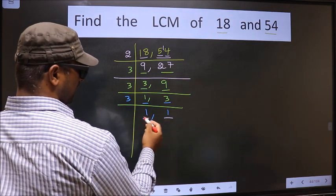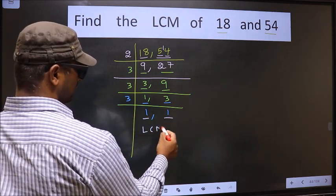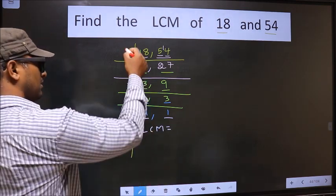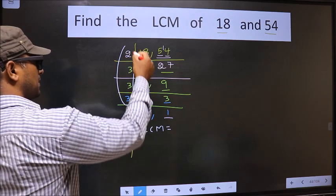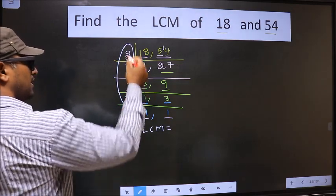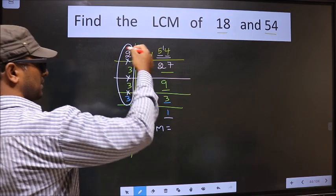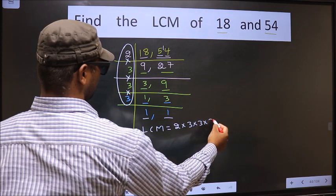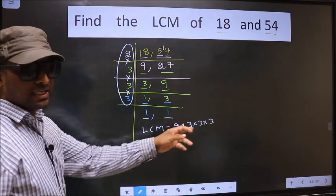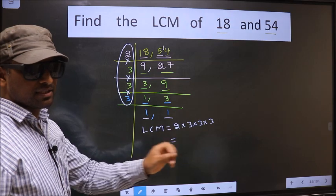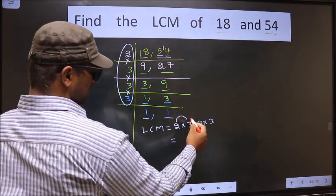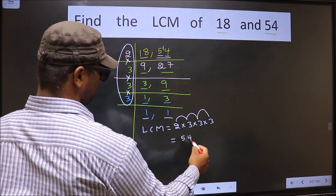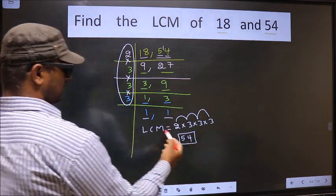We got 1 in both places. So our LCM is the product of these numbers, that is 2 into 3 into 3 into 3 into 3. So let us multiply: 2 into 3 is 6, into 3 is 18, into 3 is 54. So 54 is our LCM.